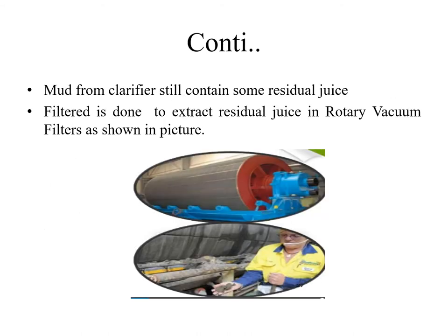Mud from the clarifier still contains some residual juice. Filtration is done to extract this residual juice in rotary vacuum filters. At the end of the slide, there is a picture of the filtration assembly used to separate the cleared juice and muddy cakes.